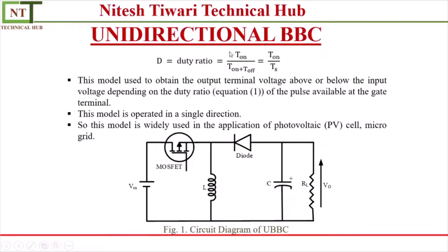This is the duty cycle, defined as the turn-on time of the MOSFET. If we discuss the circuit diagram: this is your input voltage or battery — a DC source. This is your controlled switch; you can use a MOSFET or IGBT. This switch is controlled with the help of a gate pulse. This is the inductor, which is an energy-storing device. This is the uncontrolled switch — the diode. This is the capacitor and this is the load terminal.